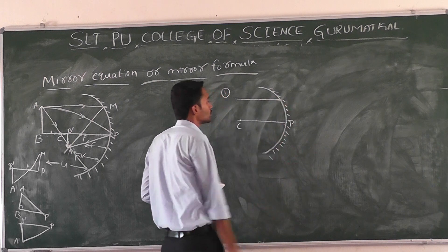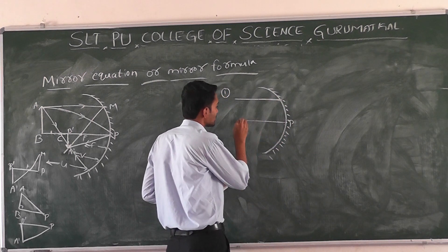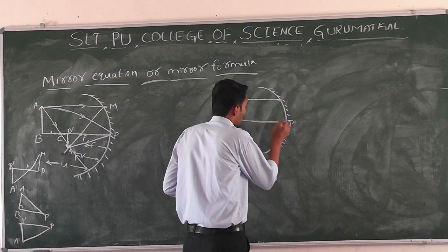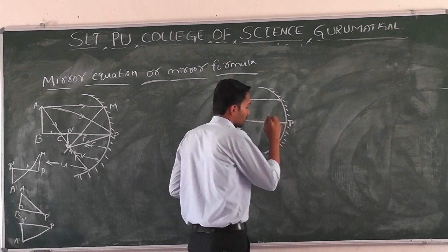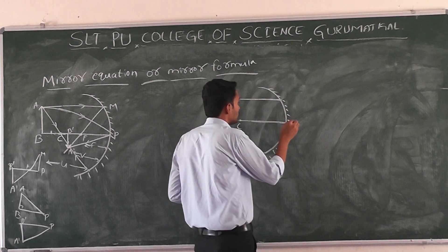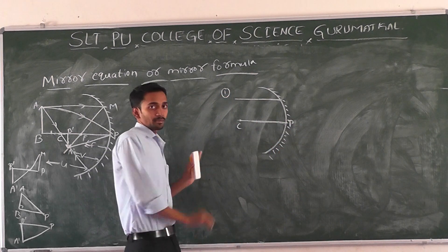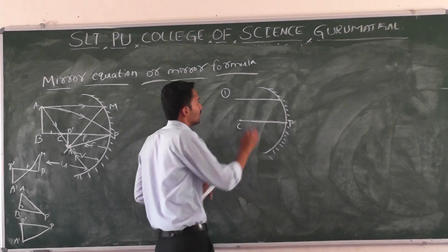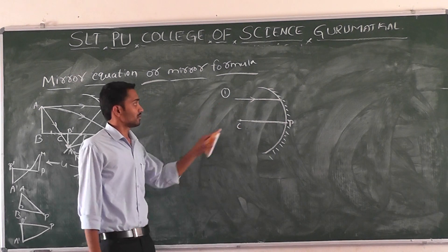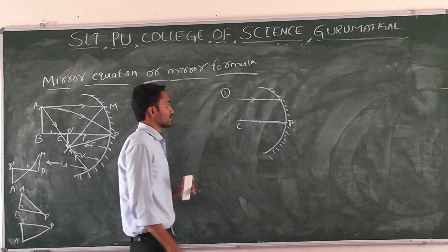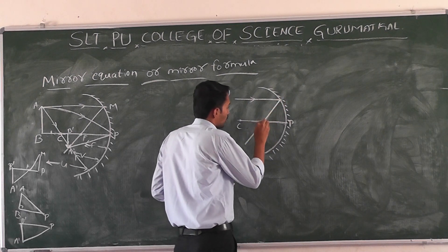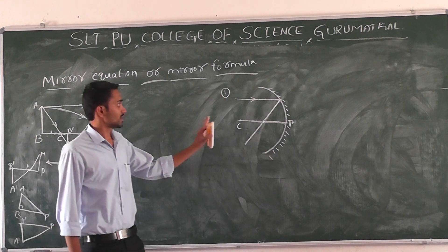In the first rule: when the light ray is parallel to the principal axis — which is the line joining the center of curvature and the pole — after reflection from the mirror, it passes through the principal focus F. This is the first rule.